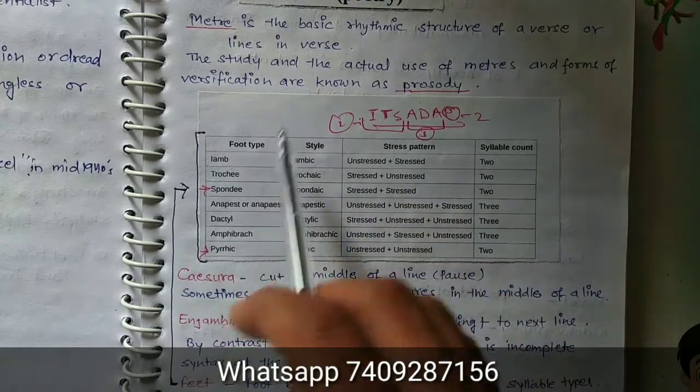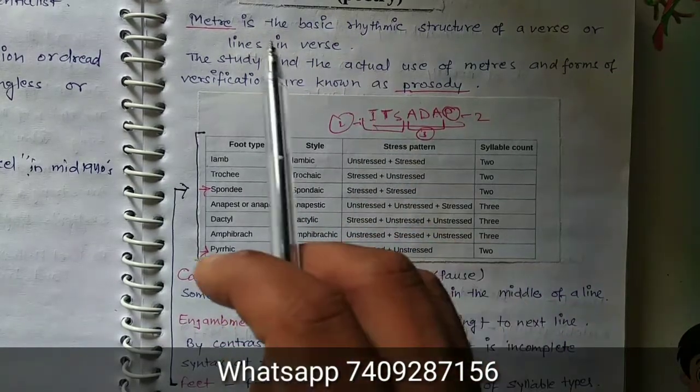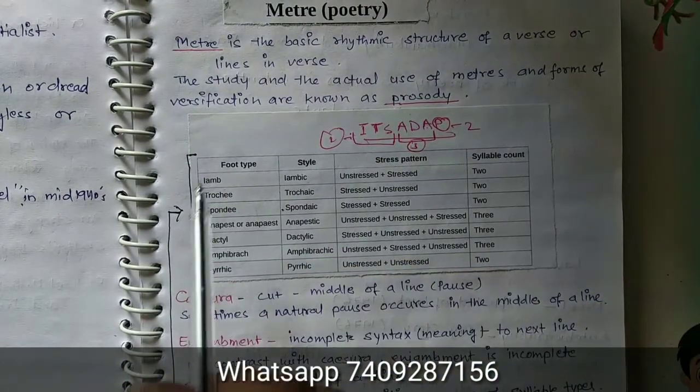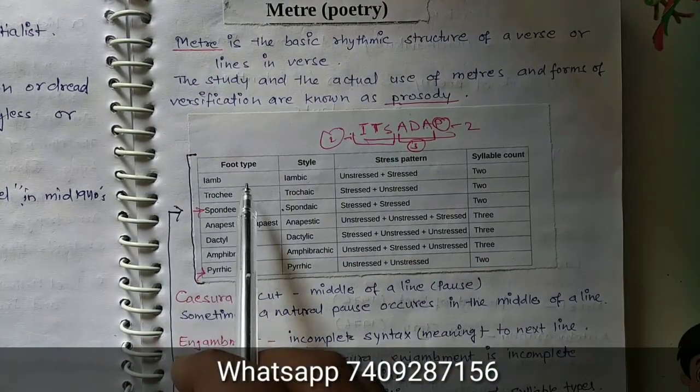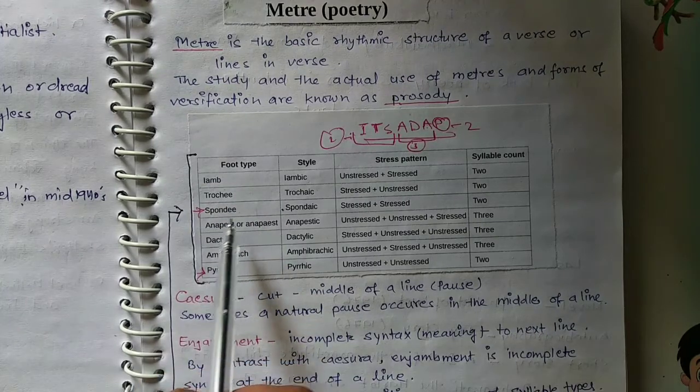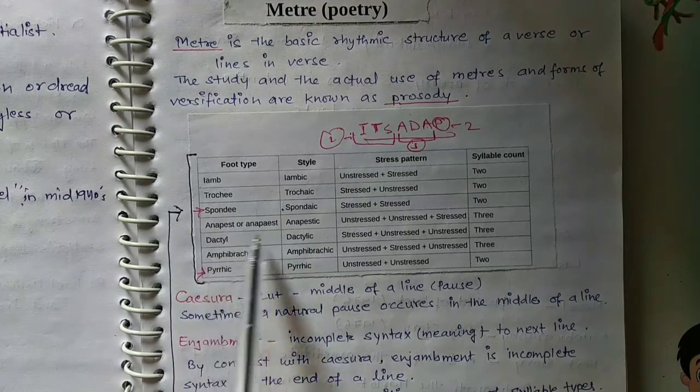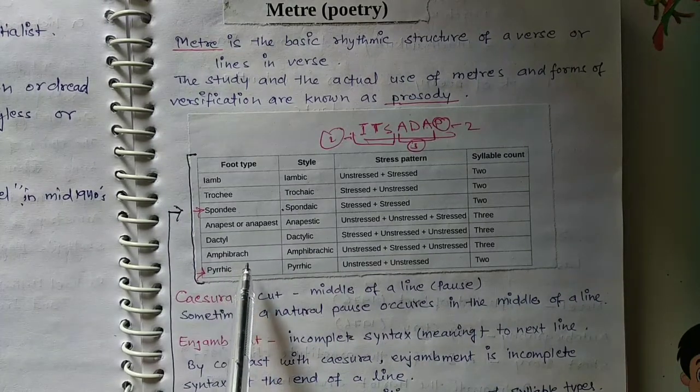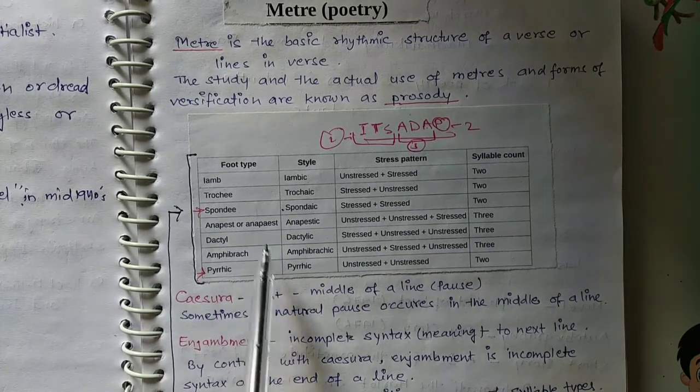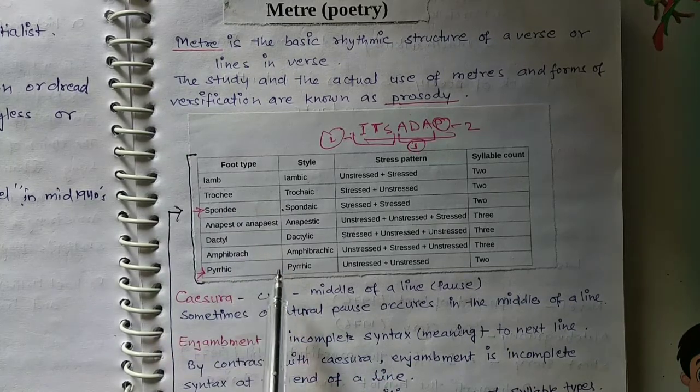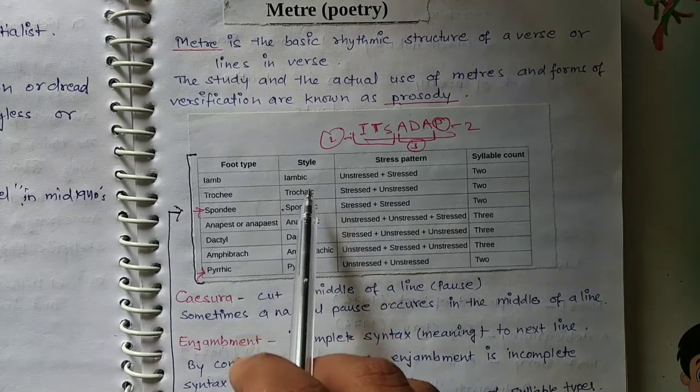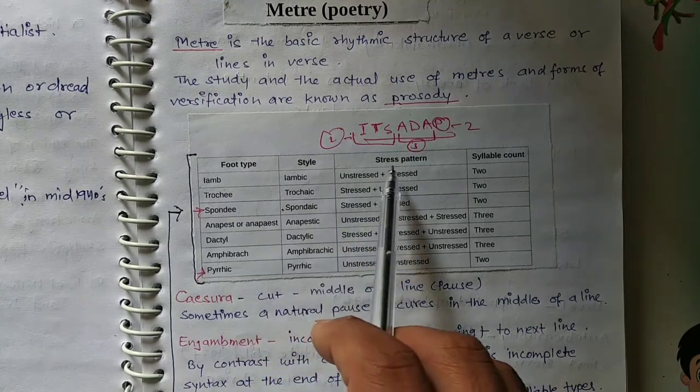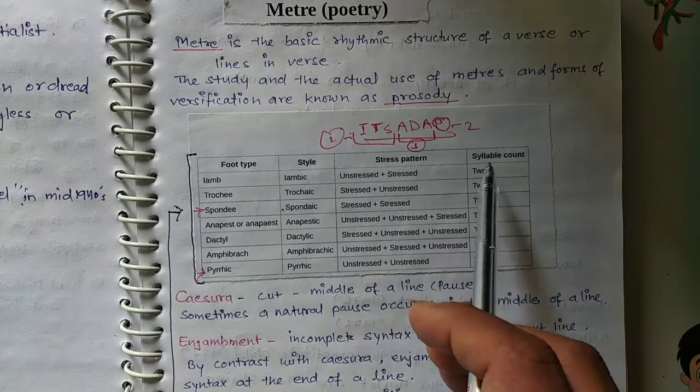But these things will be asked, like what is iamb, trochee, spondee, anapest, dactyl, amphibrach, and pyrrhic. So such foot types will be asked and their style can be asked. Usually style is not asked but stress pattern is asked and syllable count is asked. So let's go through all.